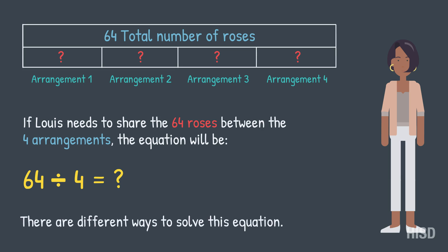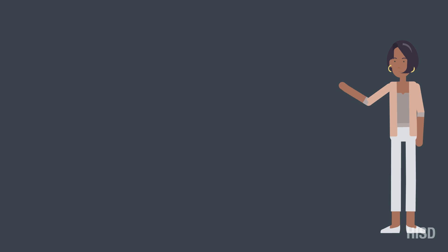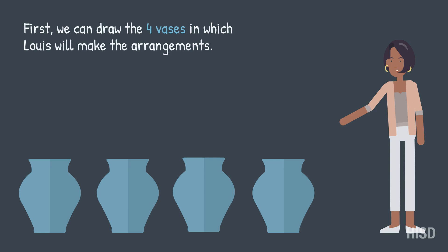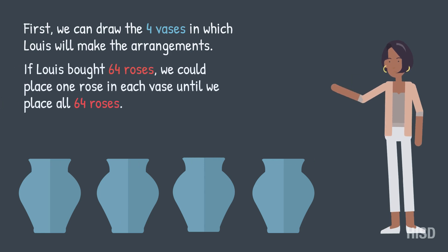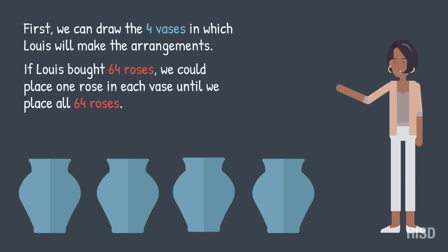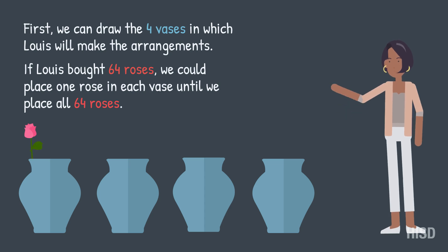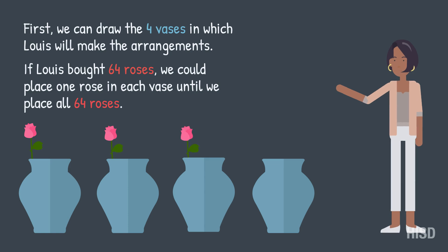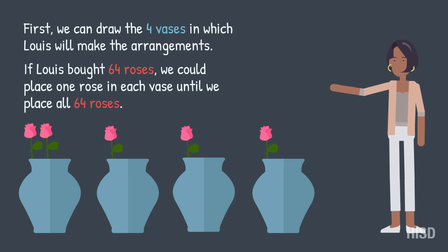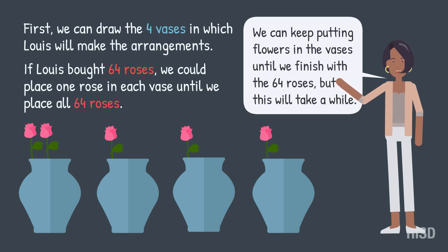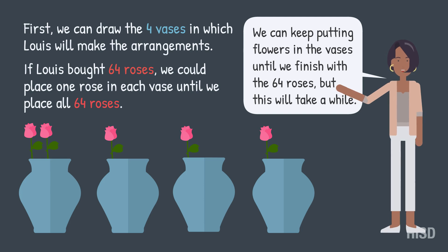There are different ways to solve this equation. First, we can draw the four vases in which Louis will make the arrangements. If Louis bought 64 roses, we could place one rose in each vase until we place all 64 roses — one, two, three, four, five. We can keep putting flowers in the vases until we finish with the 64 roses, but this will take a while.